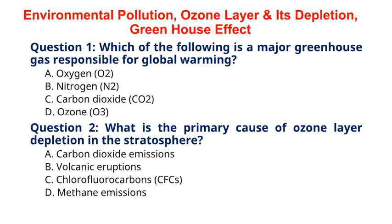Question 2. What is the primary cause of ozone layer depletion in the stratosphere? A. Carbon dioxide emissions. B. Volcanic eruptions. C. Chlorofluorocarbons, CFCs. D. Methane emissions. The correct answer to question 2 is option C. Chlorofluorocarbons, CFCs. Explanation: chlorofluorocarbons, CFCs, released from human activities such as refrigerants and aerosol propellants, are the primary cause of ozone layer depletion in the stratosphere.